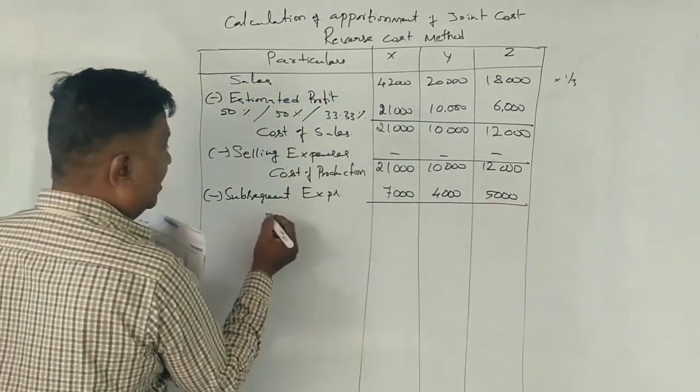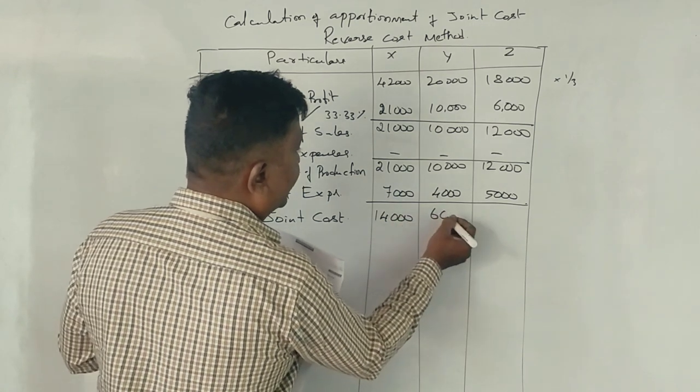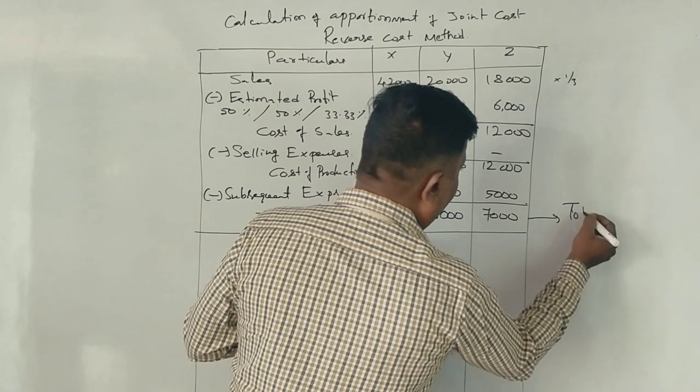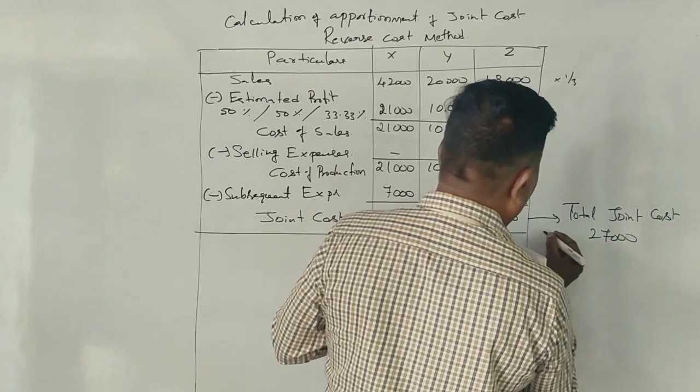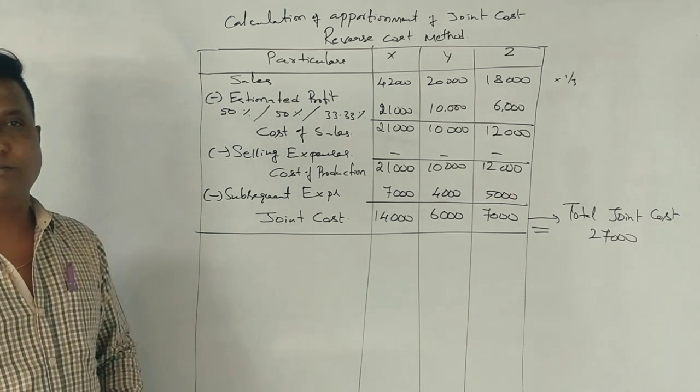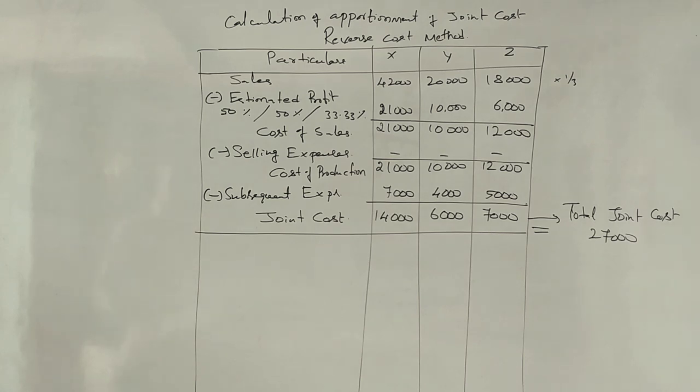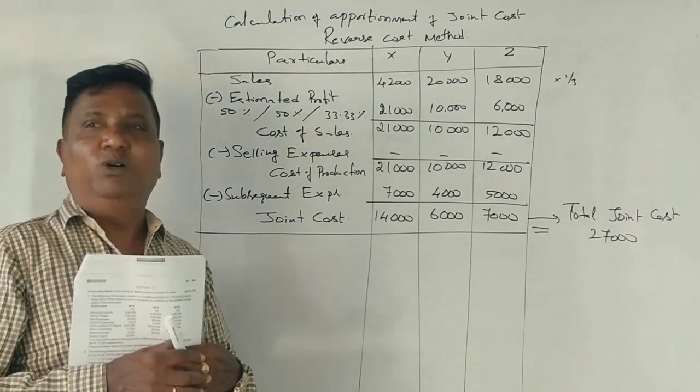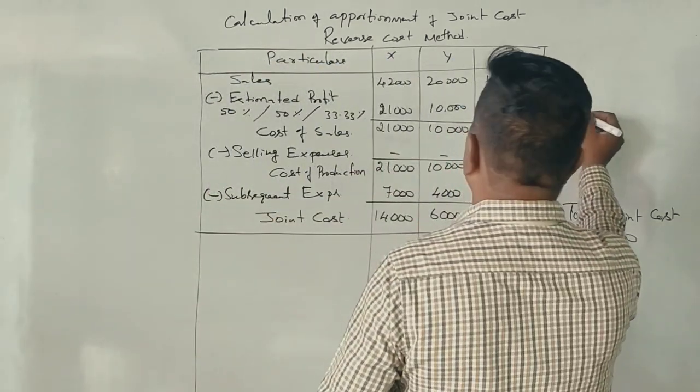Minus cost of sales. 12,000, 6,000, 7,000. Total joint cost - what is the problem? 27,000. The joint cost is 42, 20, and 80.